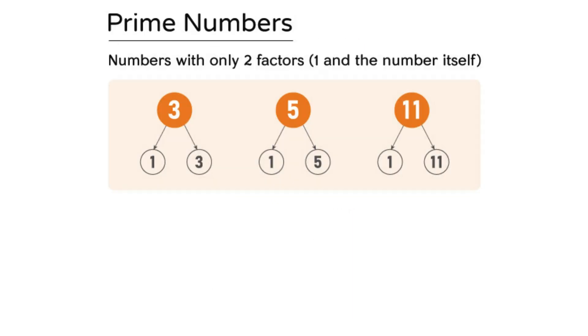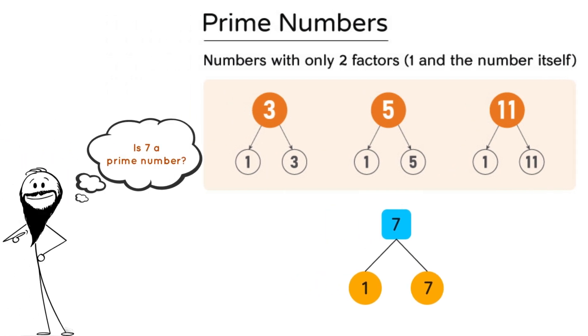A prime number is a number with exactly two factors, those being 1 and itself. For instance, the only factors of 7 are 1 and 7, so 7 is a prime number.